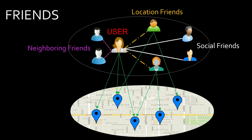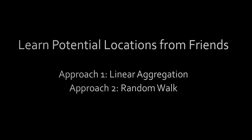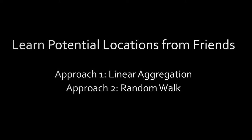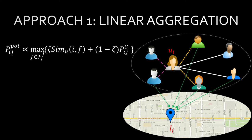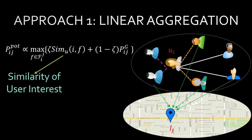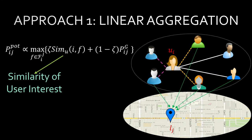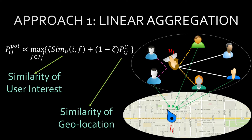We develop two approaches. The first approach is linear aggregation. We capture the similarity of users' interests and the similarity of geolocations.